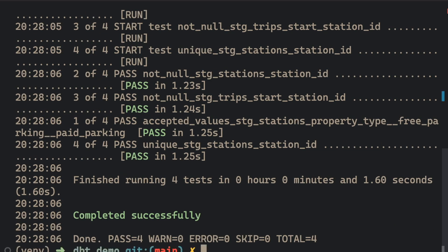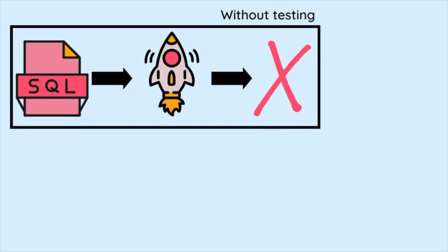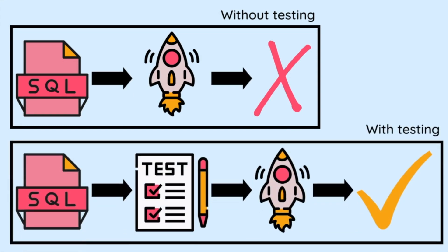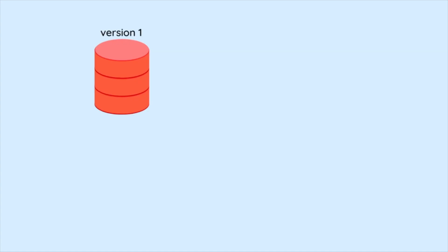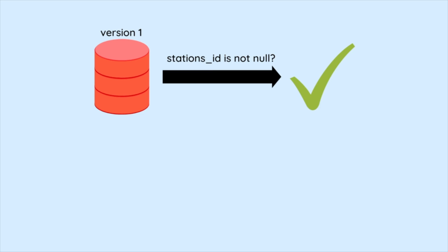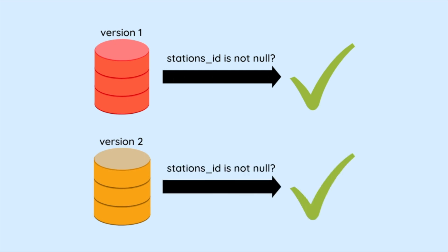All tests passed. By catching potential errors early in the transformation process, tests can reduce the risk of errors in downstream applications and analysis. In addition, tests provide a way to track changes in the data over time and ensure that the transformation logic remains correct as the underlying data changes.